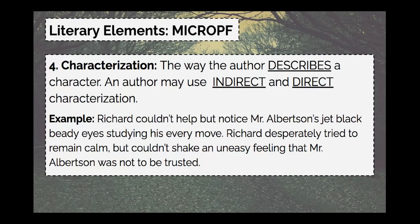Characterization is something we've been talking about for quite some time. Characterization is the way the author describes a character. An author may use indirect and direct characterization. Indirect characterization uses STEEL — we look at what the character is Saying, Thinking, their Effect on others, their Actions, or their Looks. Direct characterization is when we're told straightforward information about our character — for example, 'Megan is creative and artistic' or 'Robert is quiet and shy.'